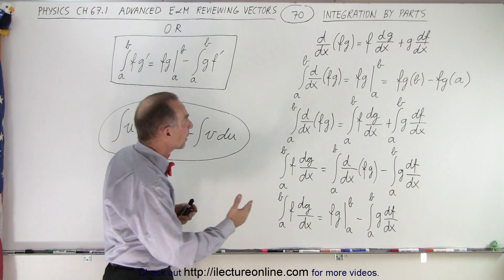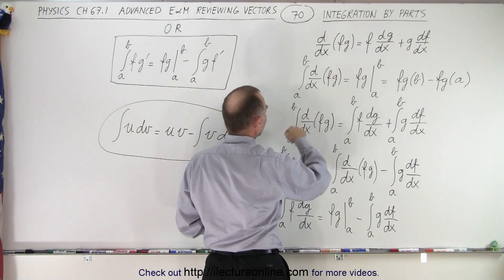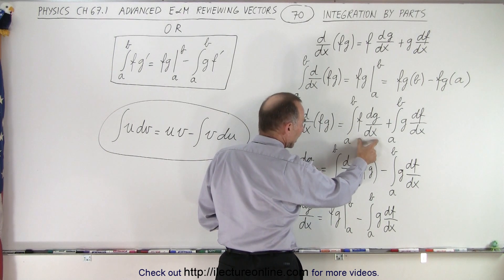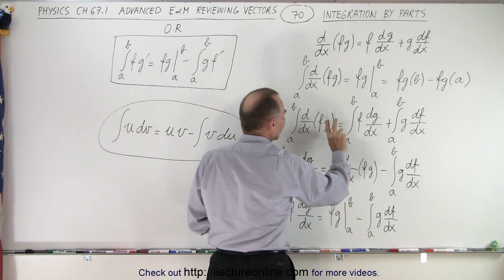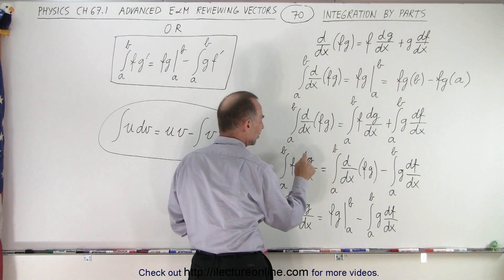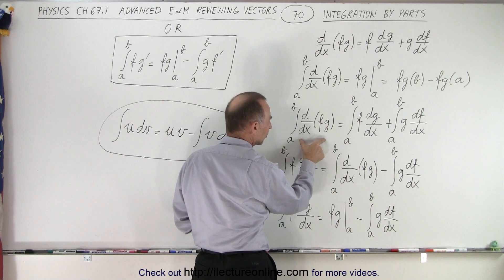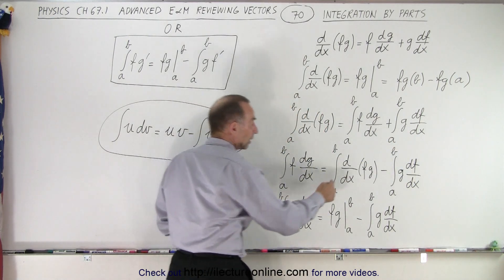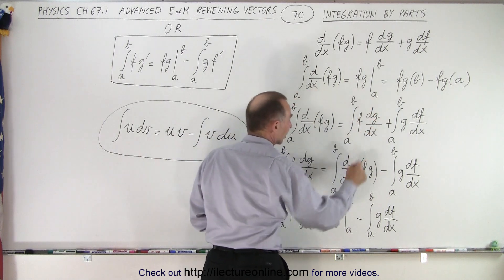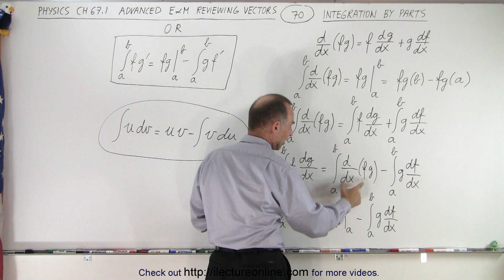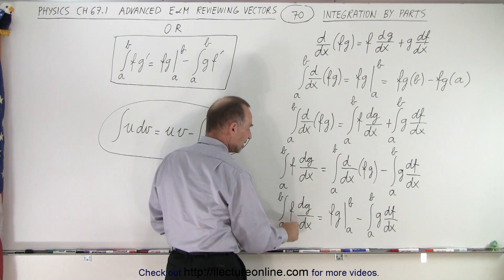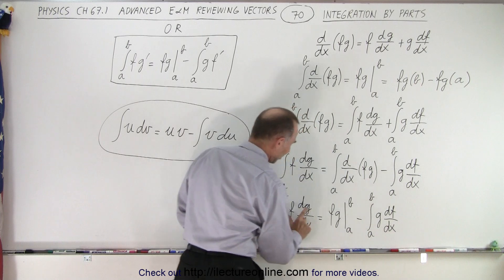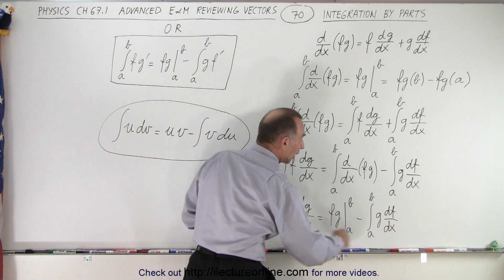We use that principle to apply it to this equation. Taking the integral of the left side equals the integral of the right side. If I isolate one term, moving it to the left side and turning the equation around, I have the integral of f times dg/dx equal to the integral of d/dx of f times g, minus the integral of g times df/dx. Because of the fundamental theorem of calculus, the first term on the right can be replaced by the evaluated form. So now I have the integral of f dg/dx equal to the product of the two functions evaluated at its endpoints, minus the integral of g df. We've essentially changed f dg to g df — this is integration by parts.